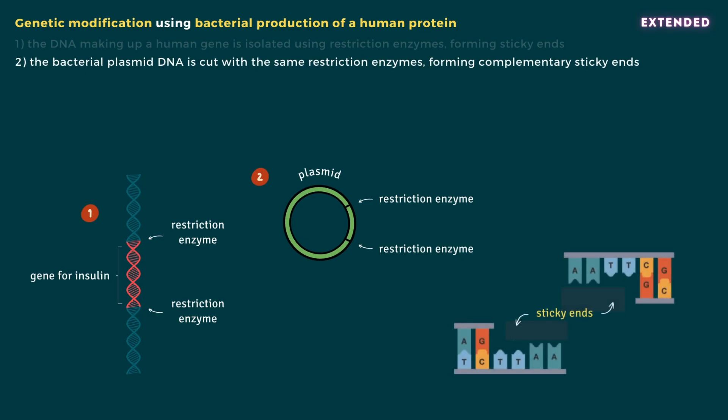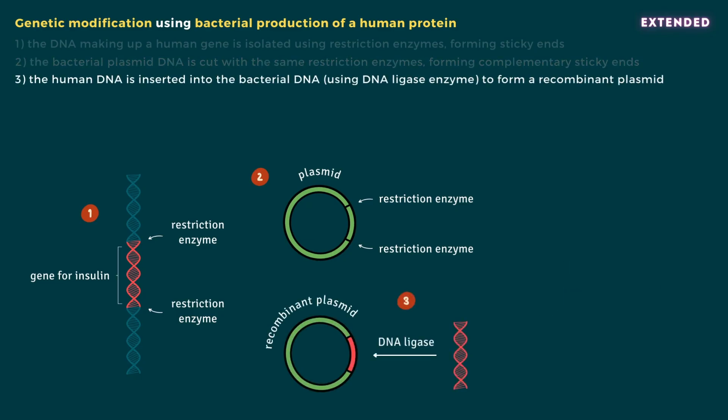Sticky ends are short sections of unpaired bases. The human DNA and the bacterial DNA have complementary, or matching, sticky ends because they've both been cut by the same restriction enzymes. Step 3: The human DNA is inserted into the bacterial plasmid DNA using DNA ligase enzyme. The modified plasmid is referred to as a recombinant plasmid.